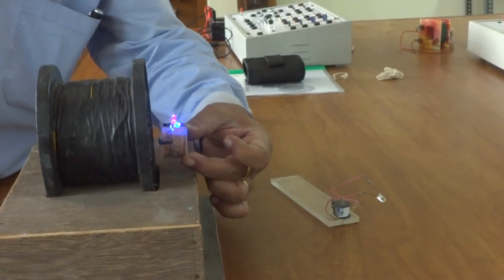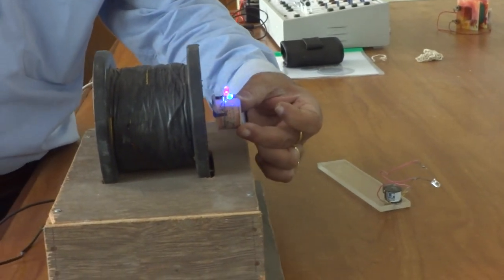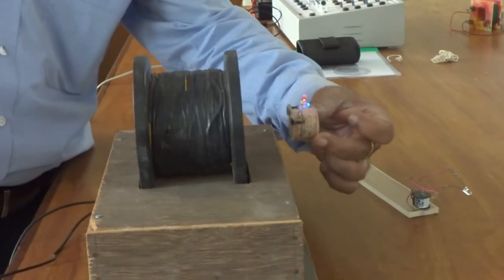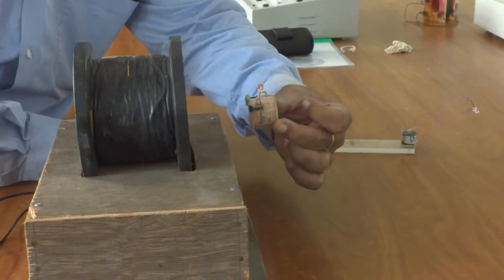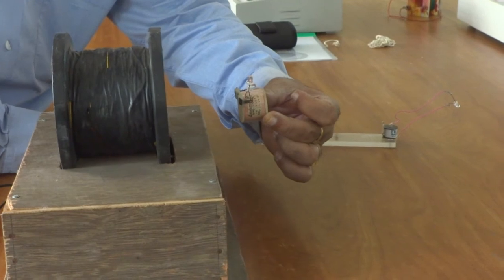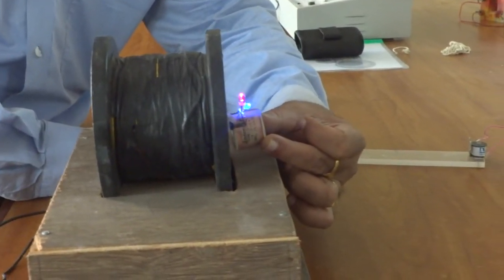Now let us verify the factors on which mutual induction depends. The very first one is, when the coil is far off from the primary coil, the light becomes dimmer. Now when I move it closer, it is getting brighter.